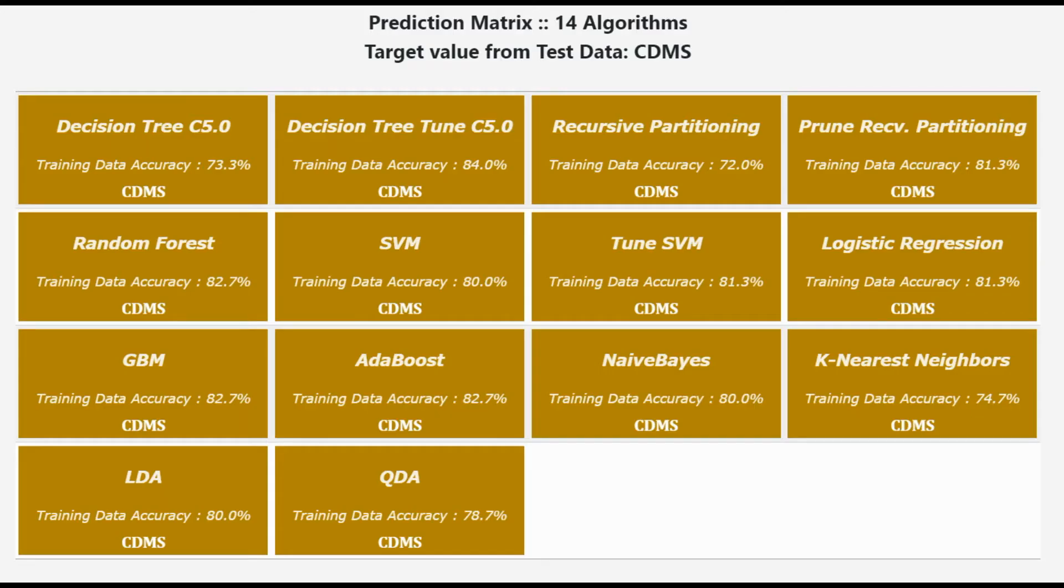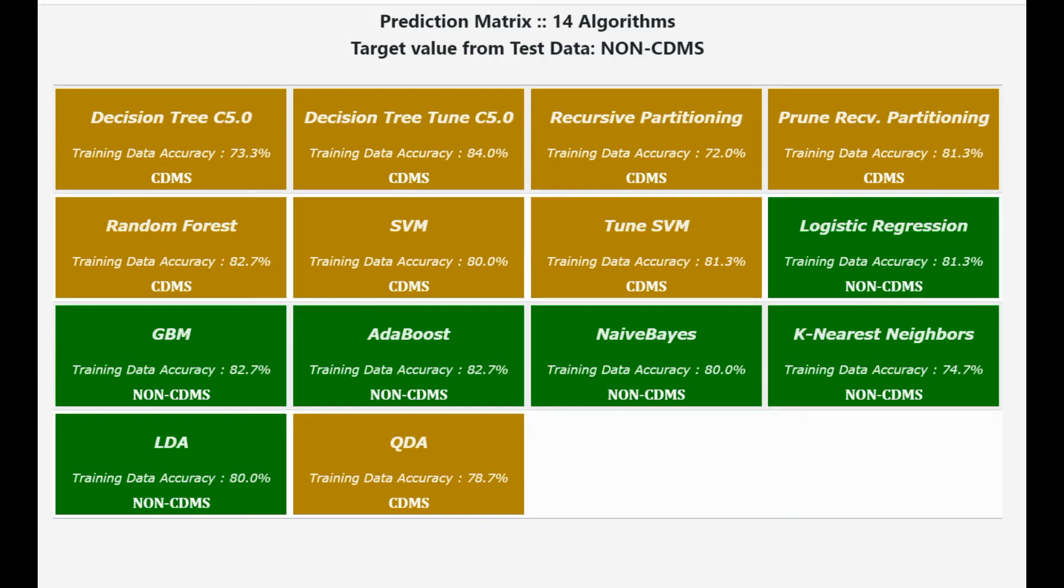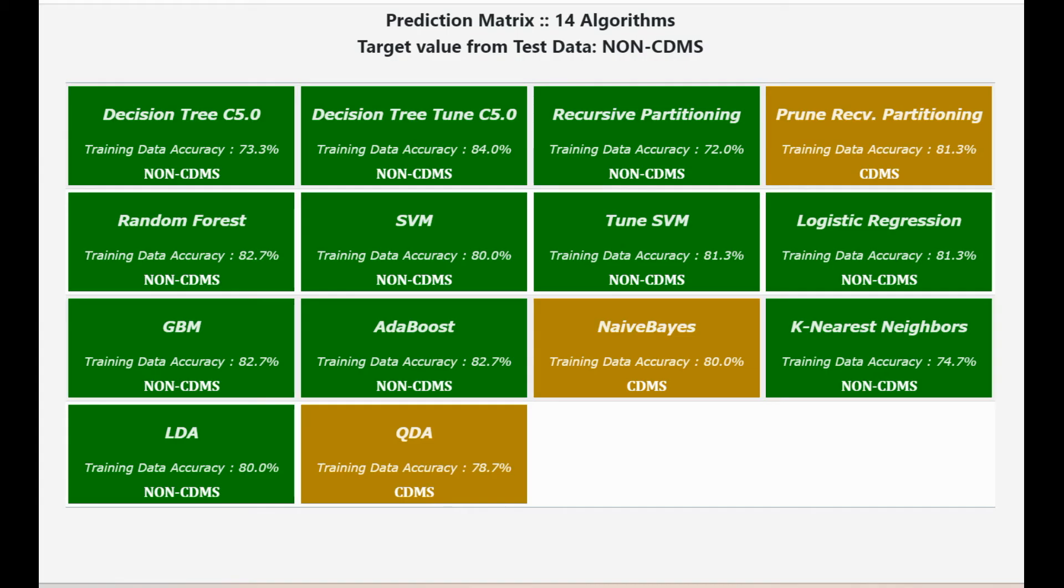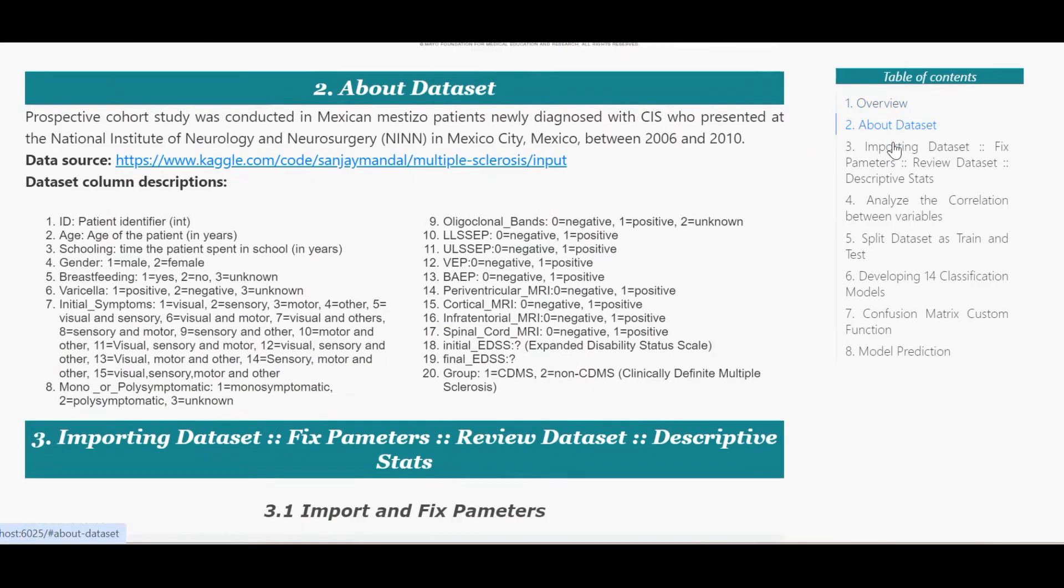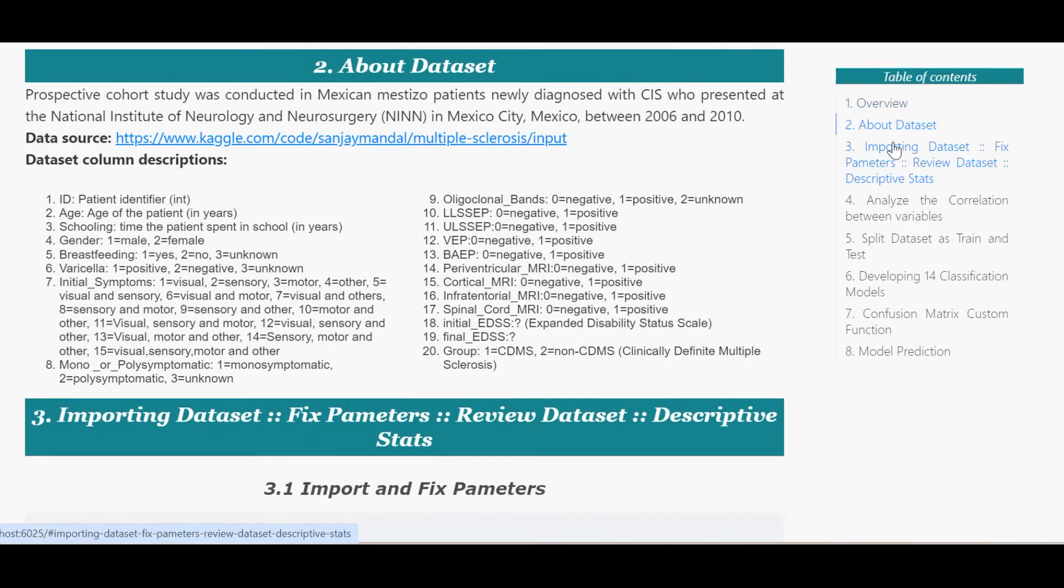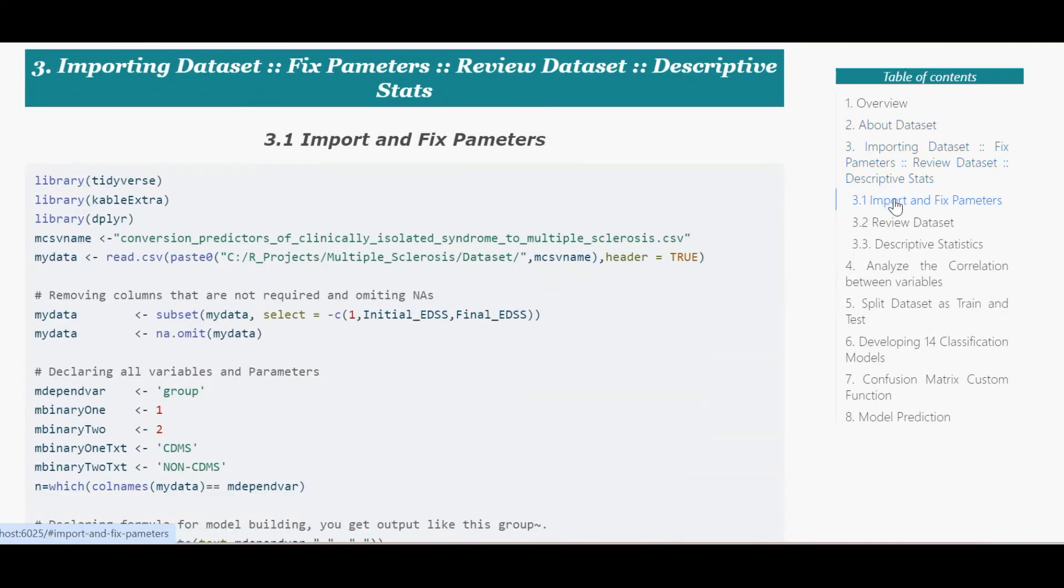From the reported matrix, you will see whether all algorithms predict the dependent variable correctly, or which one of the algorithm's predictions are not in line with actual target value. Such a reproducible report is built on Quarto R markdown. You could see nicely arranged table of contents. Scripts are provided with suitable comments and explanations, and easy to follow.